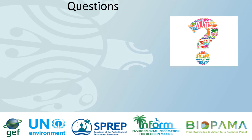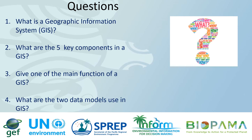To help you remember these main concepts, there are four questions we would like you to reflect on in your own time. Number one, define what a GIS is. Number two, what are the five key components of a GIS? Number three, give one of the main functions of a GIS. And number four, what are the two data models used in a GIS? This is the end of Module 1. Talk to you in the next module. Thank you.